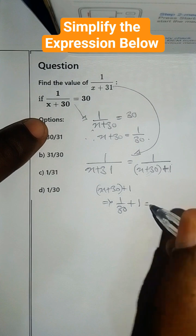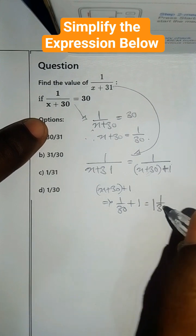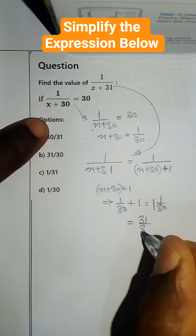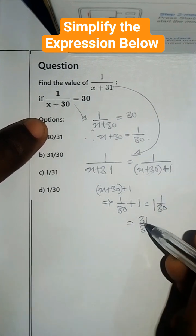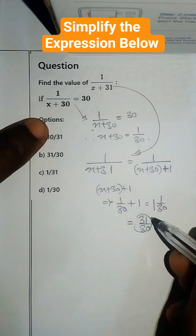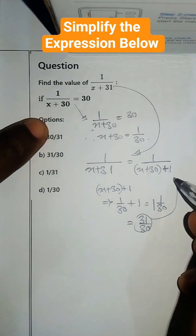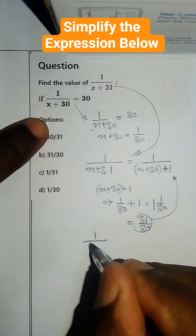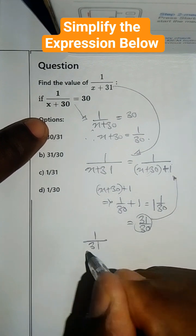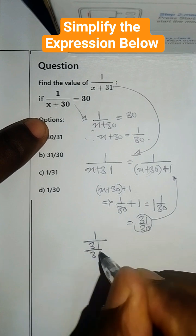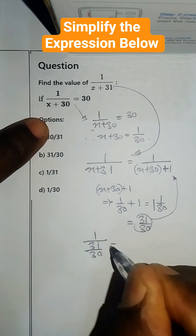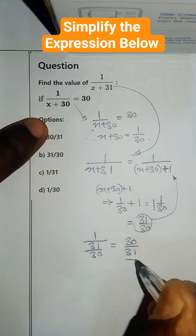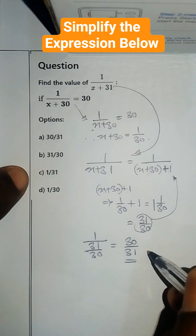So that is 1 all over 30, which gives us 1 over (30 plus 1) all over 30. Now, putting this back in gives us 1 all over 31 all over 30, which gives us 30 all over 31 as our final answer.